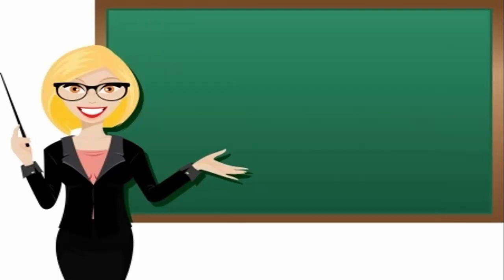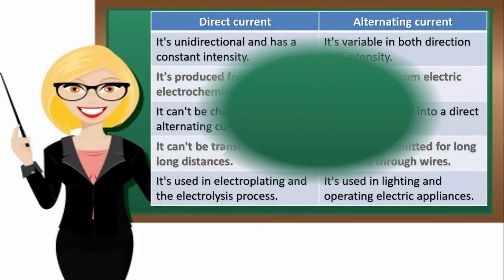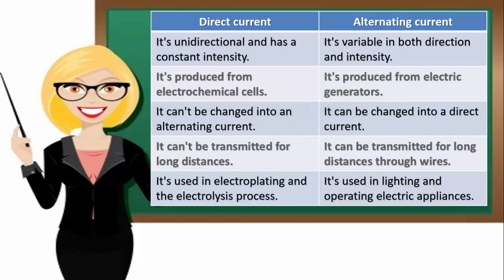Points of comparison. First, direction of flow and intensity. Direct electric current is unidirectional and constant intensity. Alternating electric current AC is variable in both directions and intensity.